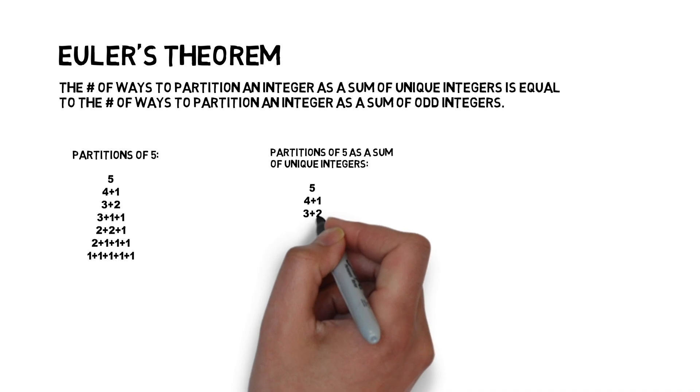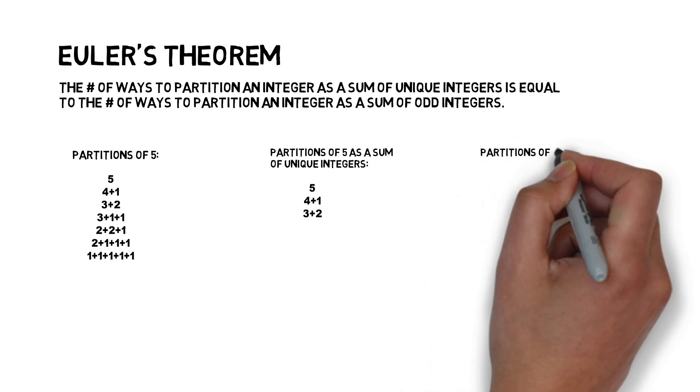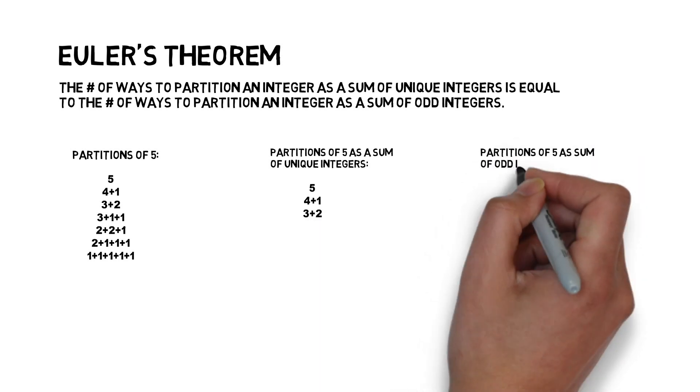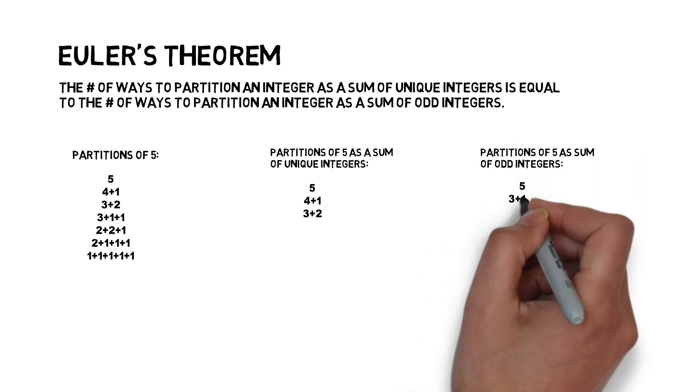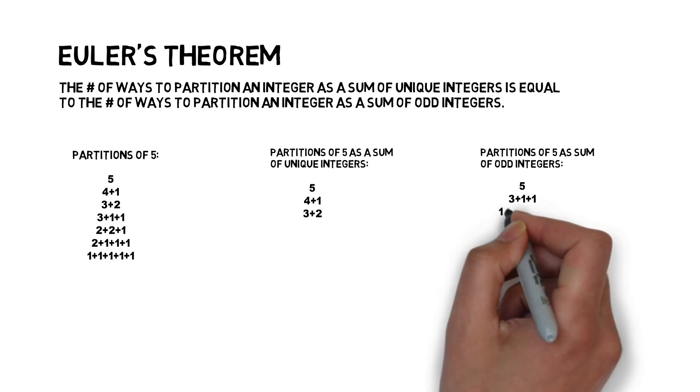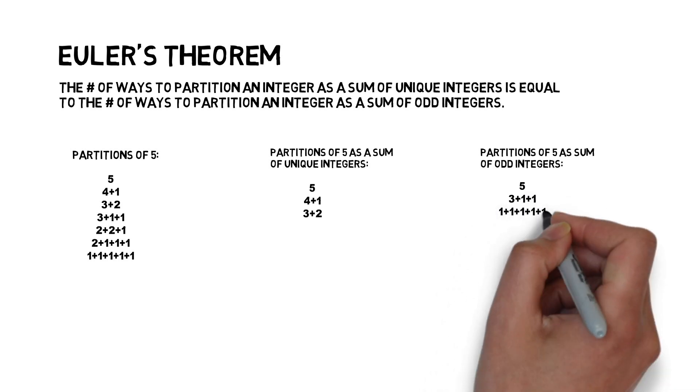Now, how many of the partitions are a sum of just odd integers? Well, we also have three of them: we have 5, we have 3 plus 1 plus 1, and 1 plus 1 plus 1 plus 1 plus 1.